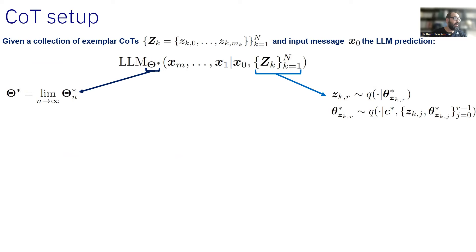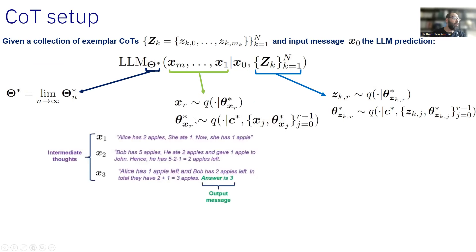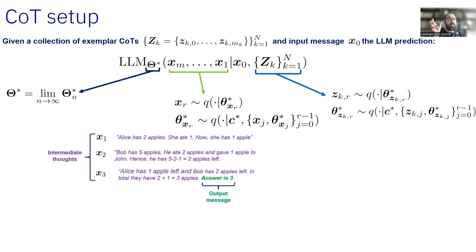X0 is the initial prompt, and XM — the sequence of thoughts — will be generated. According to our natural language statistical model assumption, the message XR is sampled from Q given the intention theta star, and theta star is sampled from Q given the context and the previous intentions. So I have a set of thoughts sampled according to my statistical model of natural language, and the LLM will proceed to generate these thoughts autoregressively.